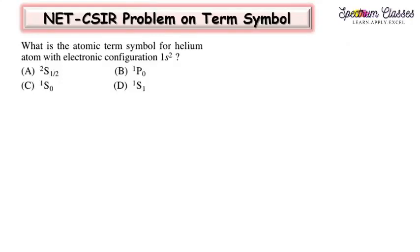Hello everyone, welcome back to Spectrum Classes. This is my next video on the topic of term symbols. In this video I am going to discuss a few previous year questions based on term symbols. The first question is: what is the atomic term symbol for the helium atom with electronic configuration 1s²? From my previous video, for this completely filled shell configuration, ¹S₀ will be the answer.